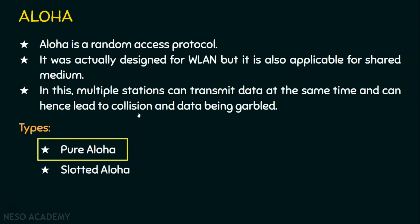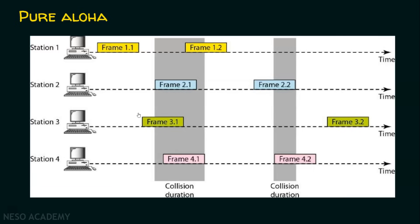Before going into the theoretical perspective, let's understand pure aloha. In this scenario we have four stations — station one, two, three, and four — sharing a common medium and a common timeline. Let's assume station one is placing its frame on the medium while station two, three, and four are not placing anything. Obviously there will be no collision; this will be a successful transmission. Frame 1.1, that is station one's first frame, will not be collided.